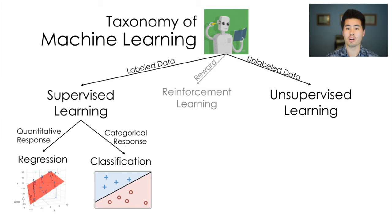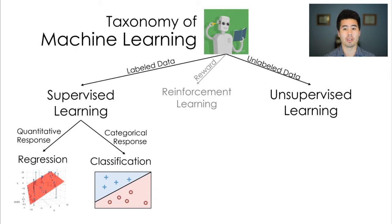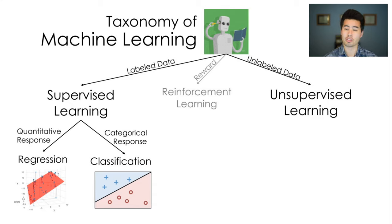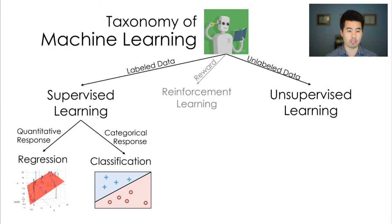What we're going to focus on specifically today and for the next couple of lectures is the branch of machine learning that's the most common for data science and probably for machine learning in general — supervised learning. We introduced machine learning with regression, which was a great place to start because that's a common formulation of supervised learning, looking at relationships between inputs and outputs and training models.